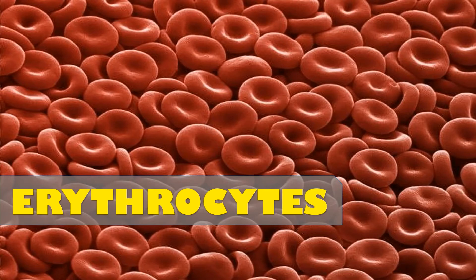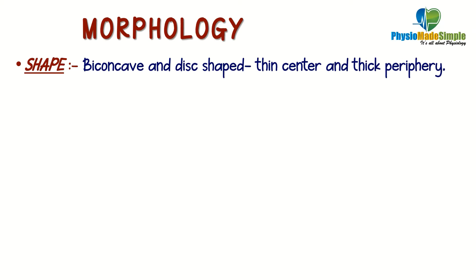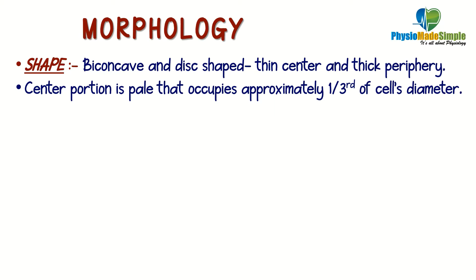In this video we will discuss the morphology of RBCs, which includes the shape, size, and structure. The shape of RBCs is biconcave disc shape with a thin center and a thick periphery. Biconcavity means a depression in the center and thickness at the ends. The center portion is pale, occupying approximately one-third of the cell's diameter.